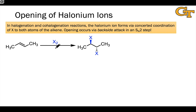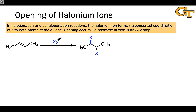In a halogenation reaction of an alkene, we're adding X2 to the alkene, and both bonds are formed in the same reaction. Mechanistically, the first step that happens here is the addition of X2 to the alkene to form a halonium ion and X-minus.